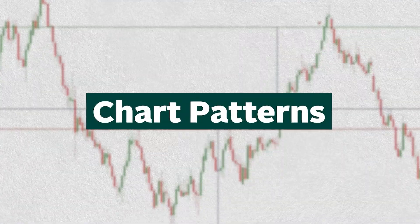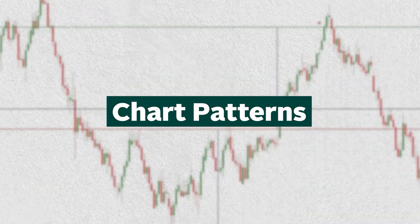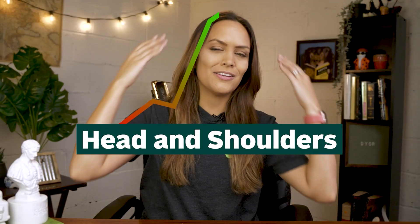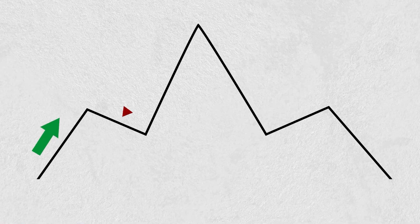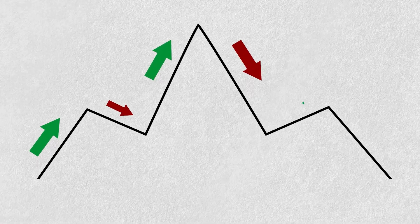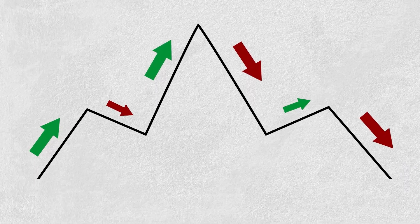Besides candlestick patterns that usually only look at a couple of individual candles, there are also chart patterns which look at larger formations. One well-known example that you've probably heard of is the head and shoulders pattern, which indicates a bullish to bearish trend reversal.